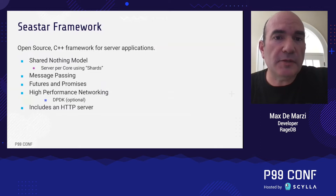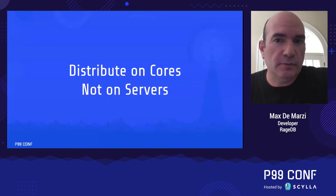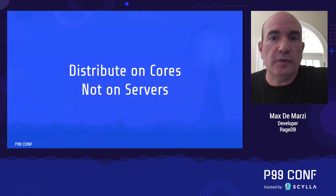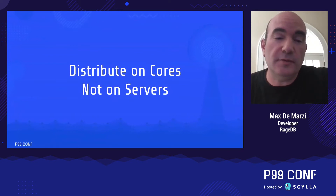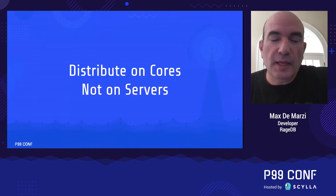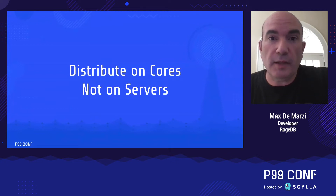The big message here is: in the future, think about sharding on cores, not on servers. One core talking to another core is orders of magnitude faster than two servers talking to each other over the network — and this network doesn't fail, unless your CPU fails and then you've got bigger problems. Think of it like distributed systems on training wheels — you have a lot less things to worry about.